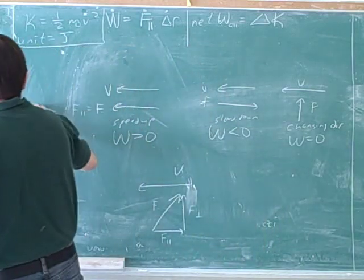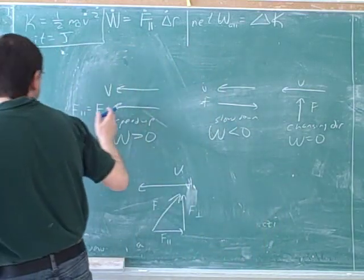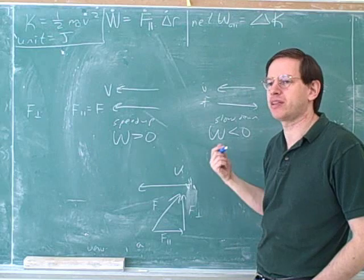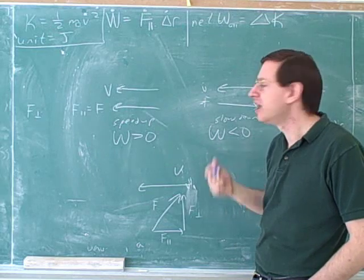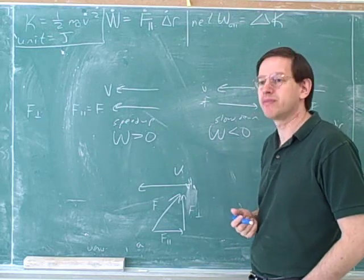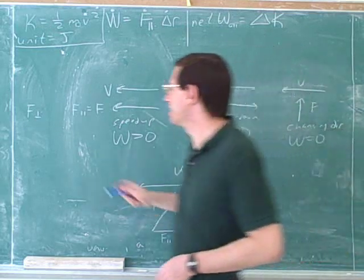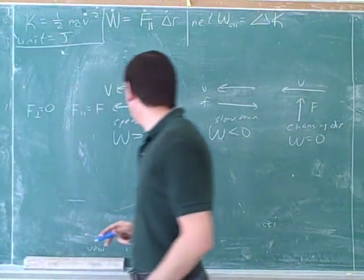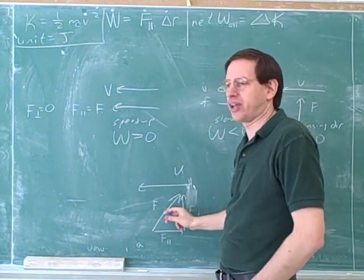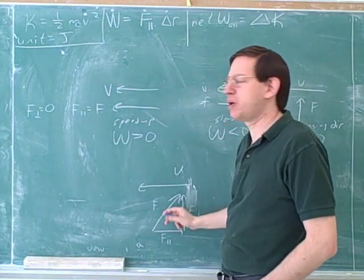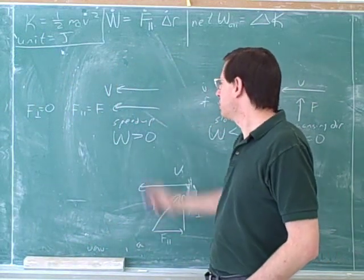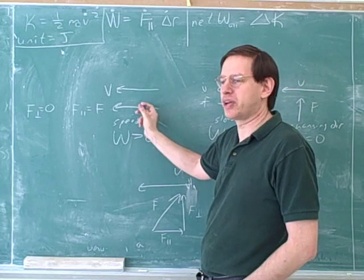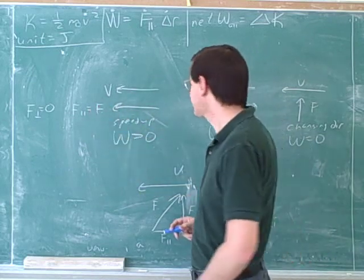Just for practice, what would we say is F perpendicular in this case — the component of the force that's perpendicular to the velocity? It doesn't exist. So in this case, notice that down here we made a little right triangle to break this into components, but you wouldn't make a right triangle here, because it's already broken into the only component that matters.